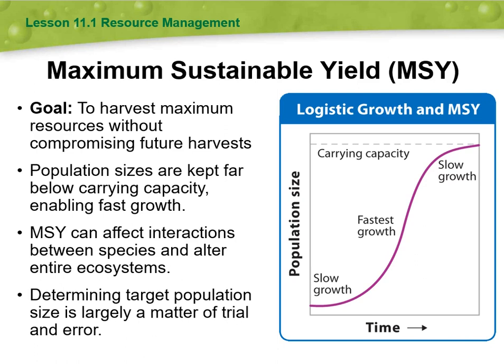Then, moving to maximum sustainable yields. The goal is to harvest maximum resources without compromising future harvests. Population sizes are kept far below carrying capacity, enabling fast growth. MSY can affect interactions between species and alter entire ecosystems. Determining target population size is largely a matter of trial and error.